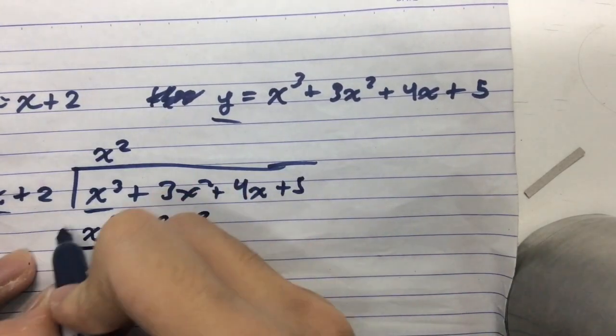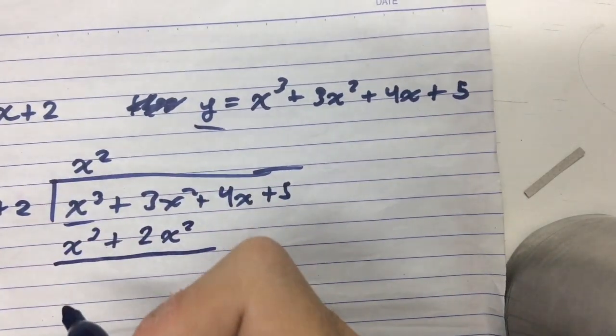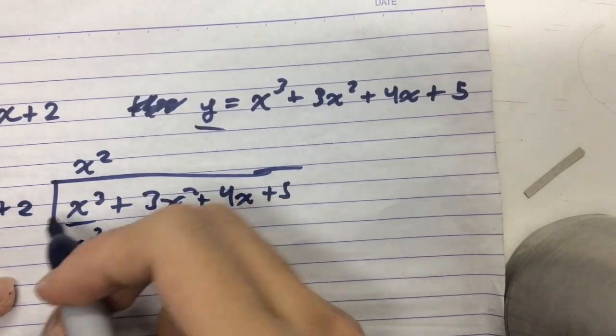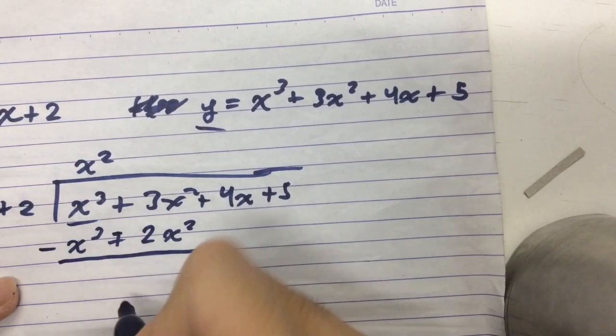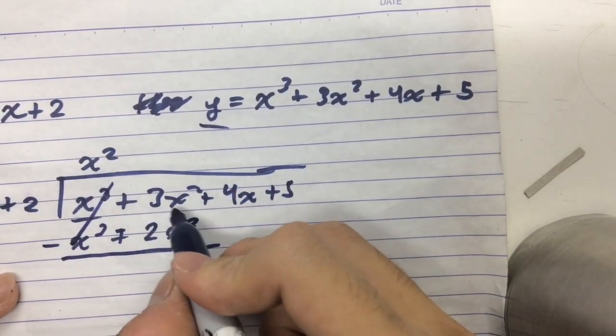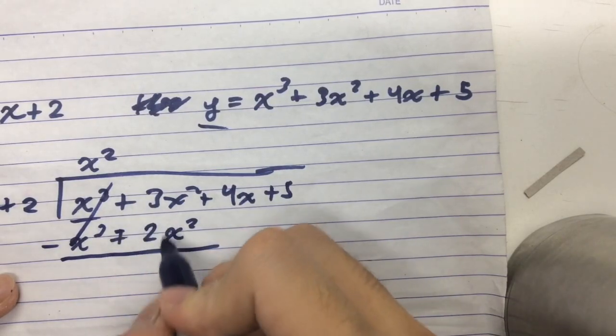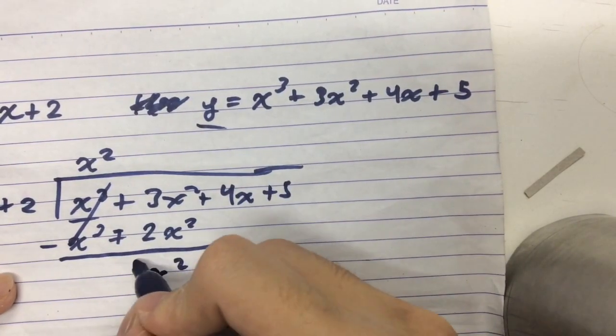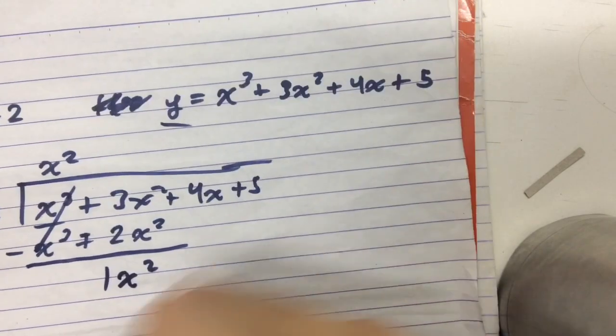Do point me out in the comments if I get something wrong here so that I can correct it in another video. So after that, we flip the signs. So this becomes negative, that becomes negative, and then this would cancel out as 0. And 3 minus 2 is just x squared.